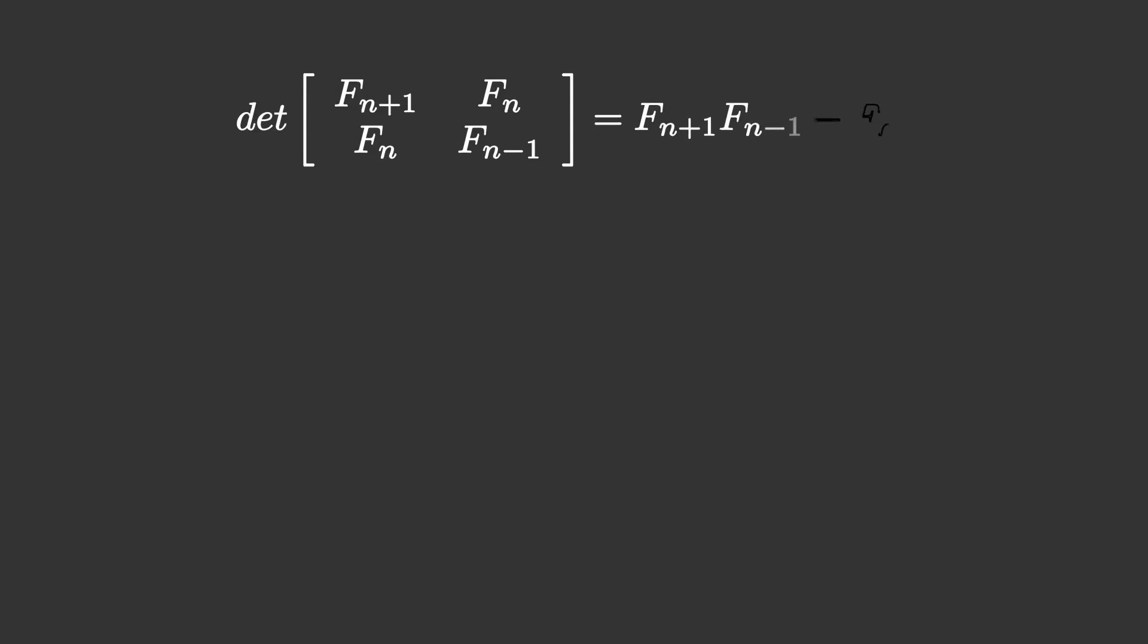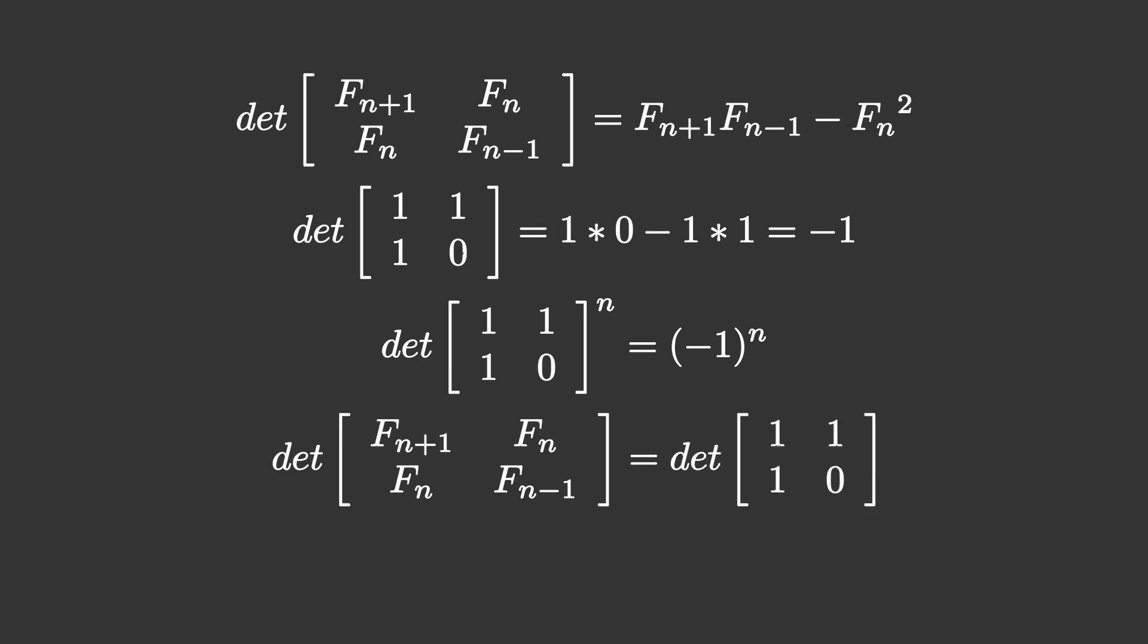So investigating this new matrix, we find that its determinant is f(n+1) times f(n-1) minus f(n) squared, which is the left hand side of Cassini's identity and what we're interested in. Going back to the original matrix describing a Fibonacci transform, we can see that its determinant is minus 1, and using the identity I proved to you at the start, we can see that raising it to the power of n simply raises minus 1 to the power of n, and as we've shown that the matrices are equivalent and as such so are their determinants, we've proven Cassini's identity.